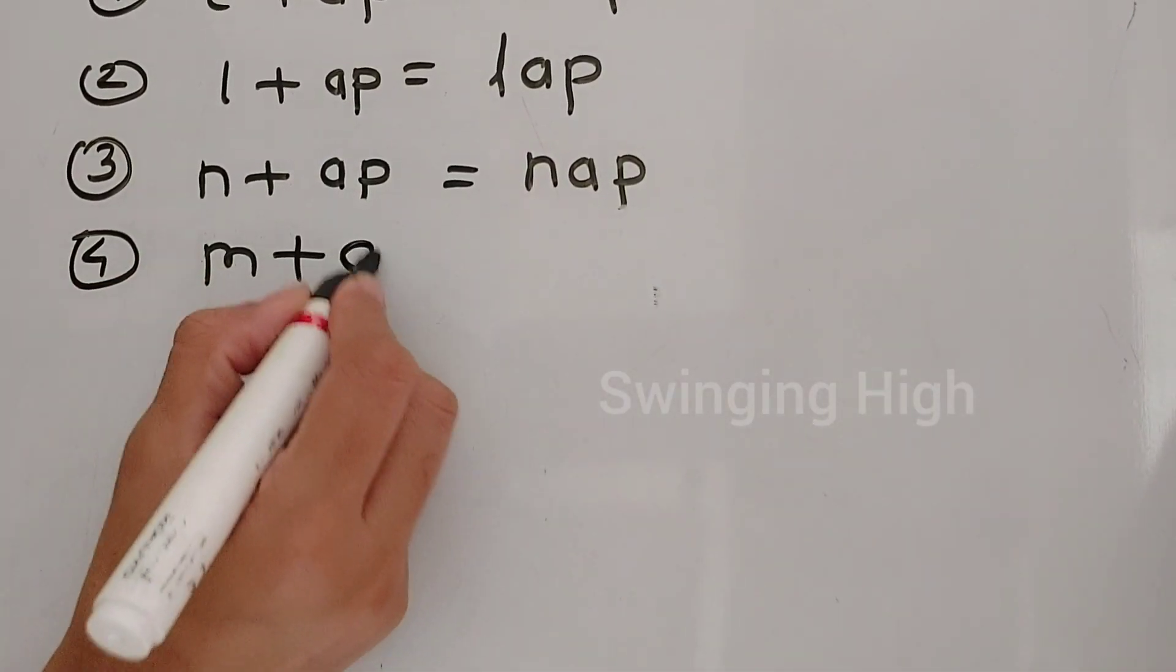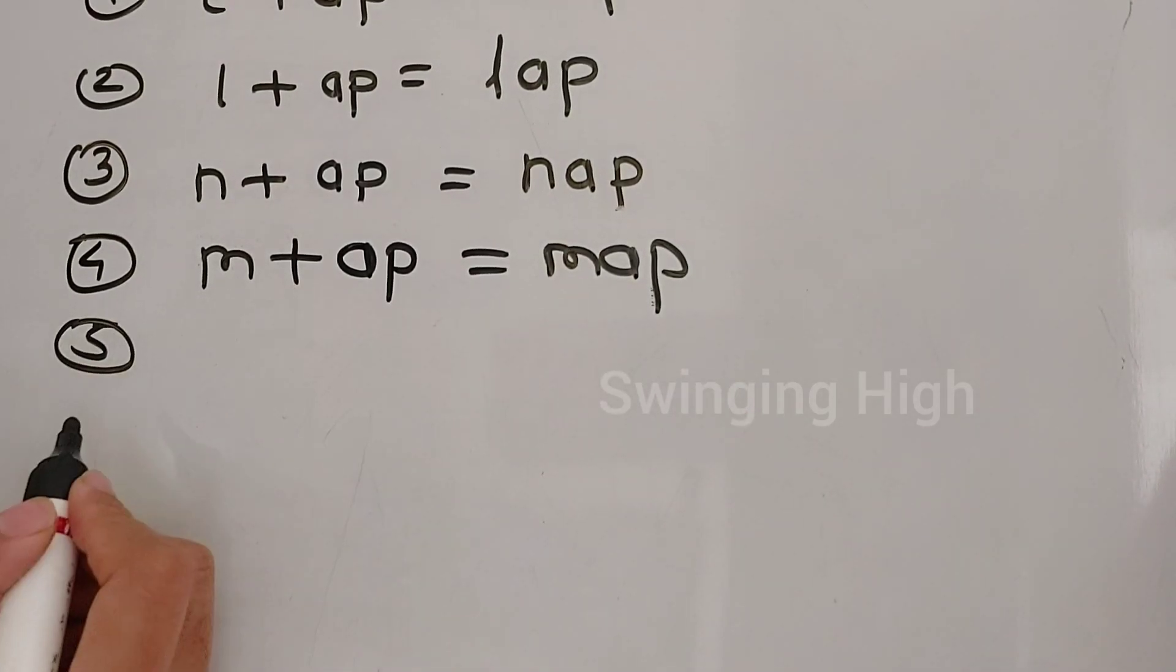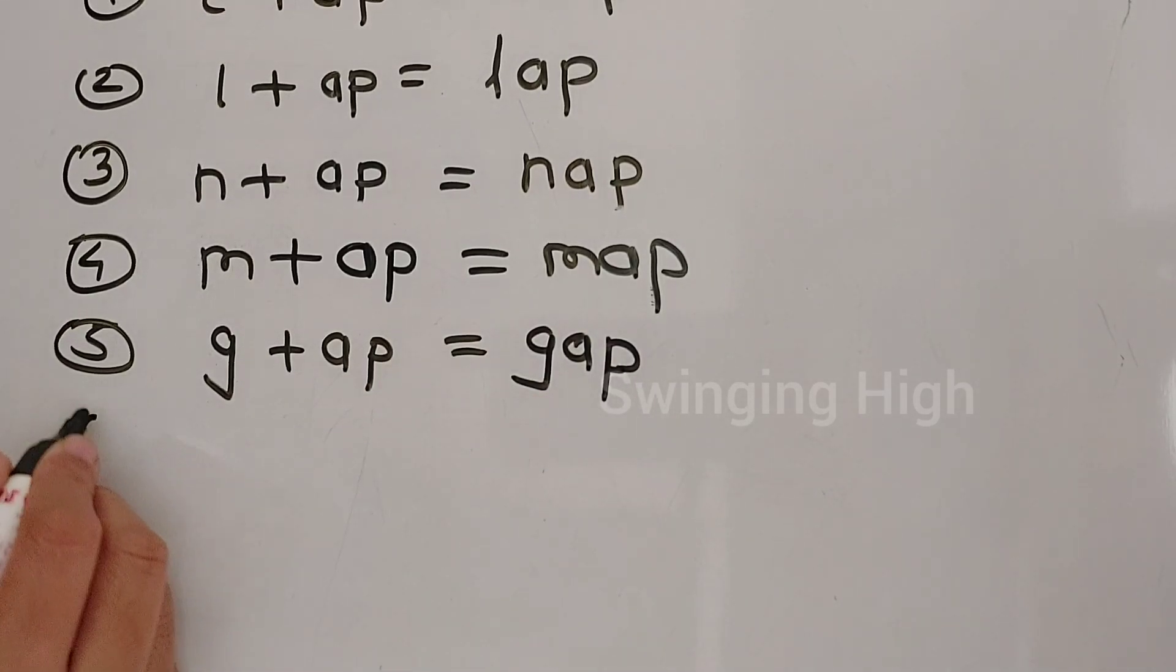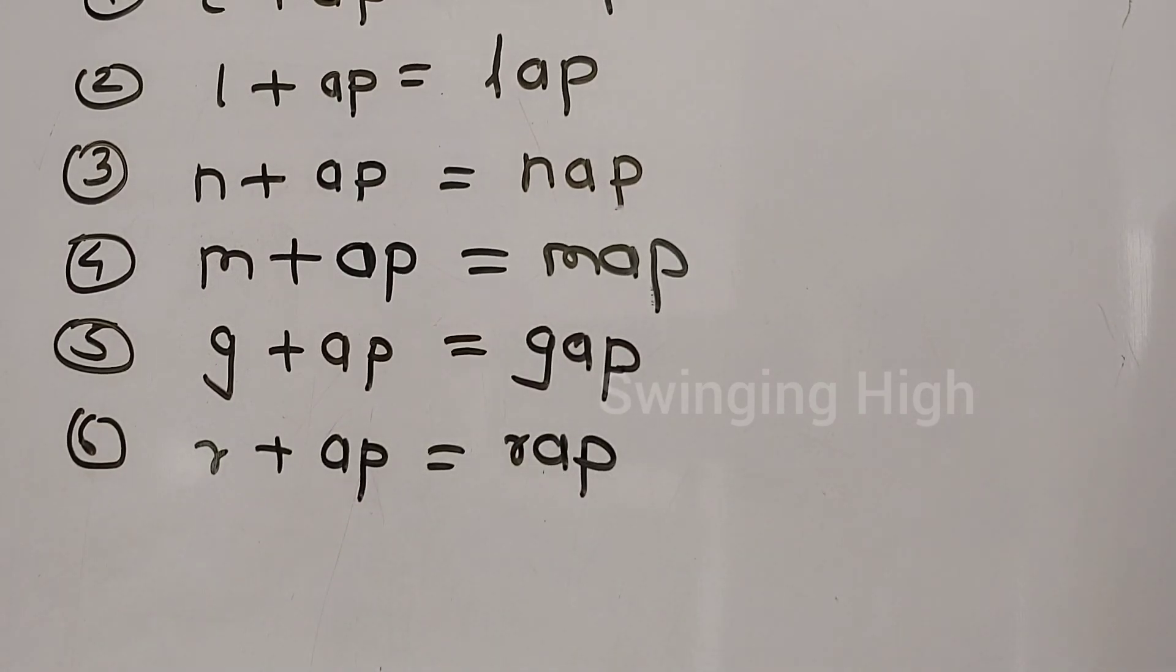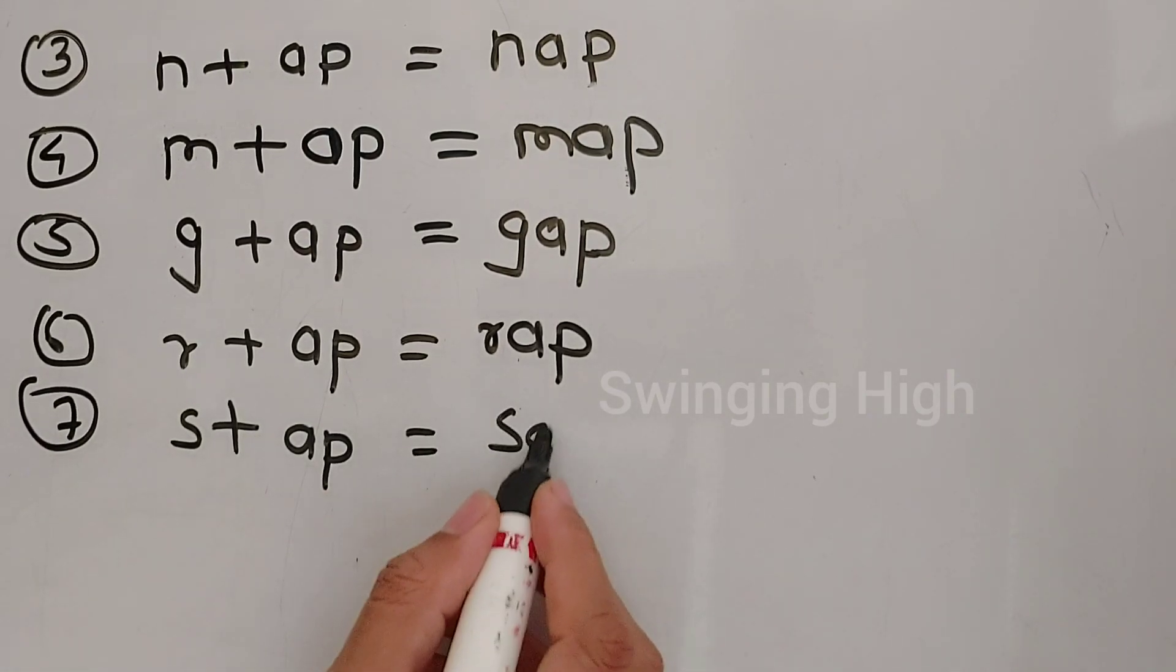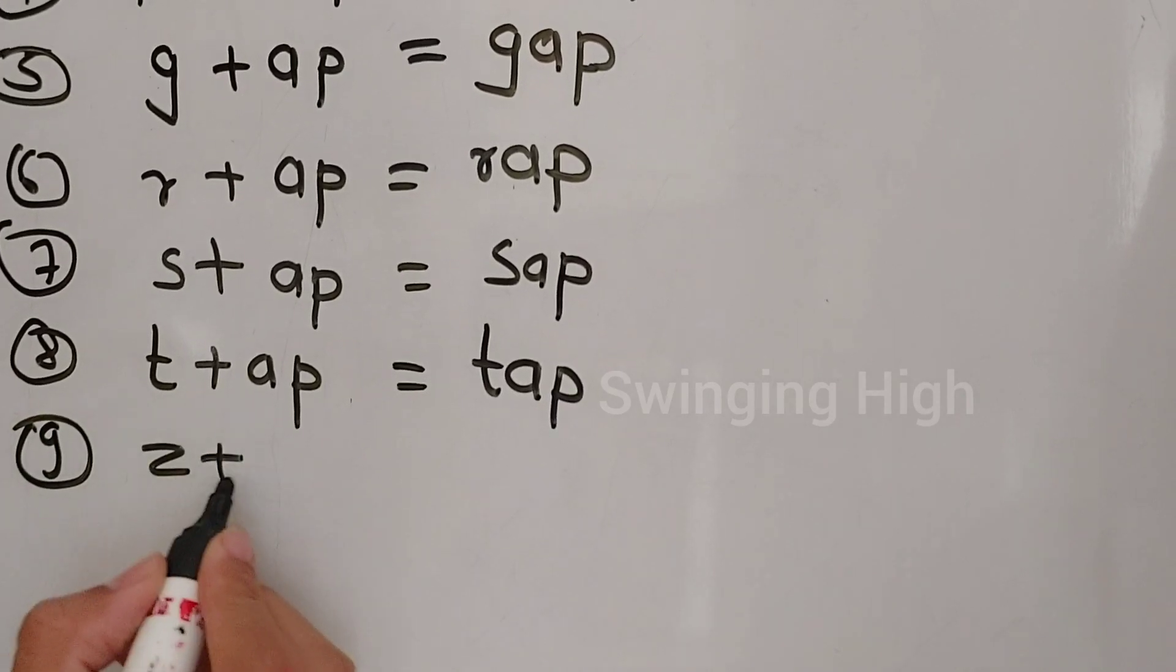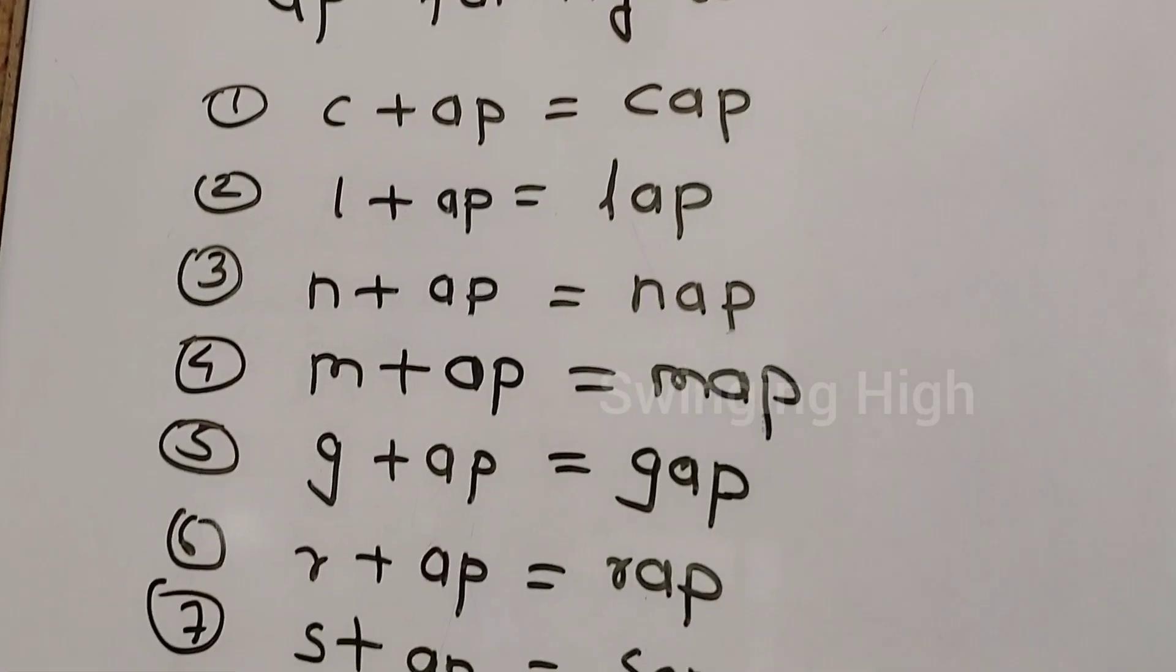M-ap, map. G-ap, gap. R-ap, rap. S-ap, sap. T-ap, tap. Z-ap, zap. These are the ap family words.